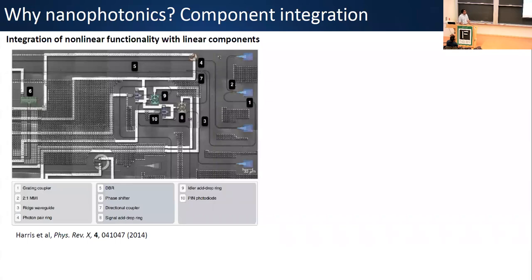Some examples of integration of nonlinear functionality with other elements: the ideal goal would be that we don't just have a nonlinear optical chip that we have to service using tabletop optics. We'd like to build everything together. There's nice work coming out of MIT and Bristol, where they combined nonlinear light generation — in this case spontaneous four-wave mixing in silicon resonators — together with passive linear functionality like splitters, filters, and interferometers.